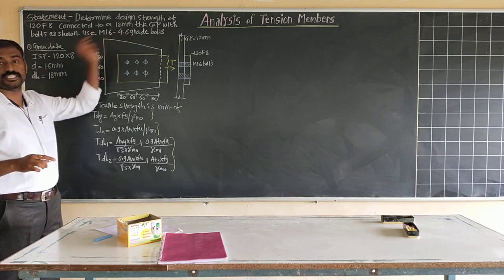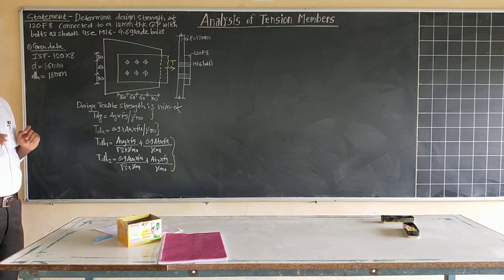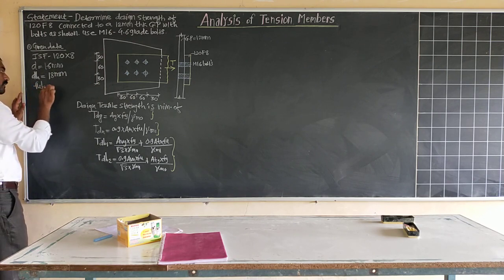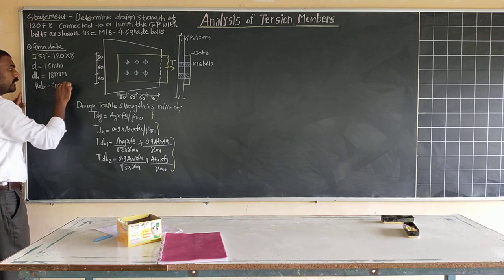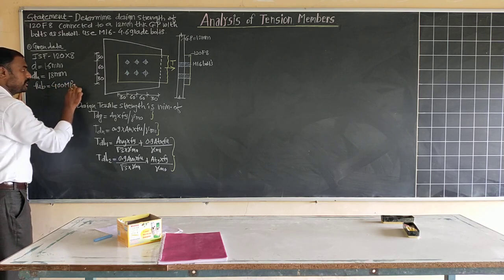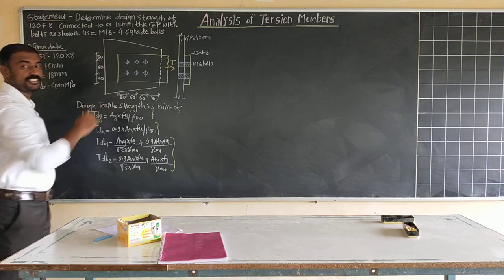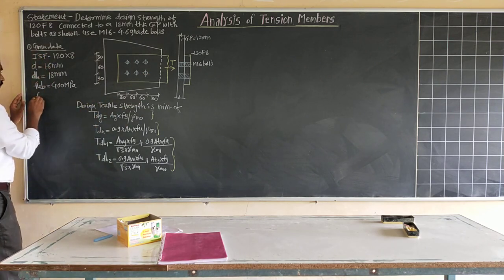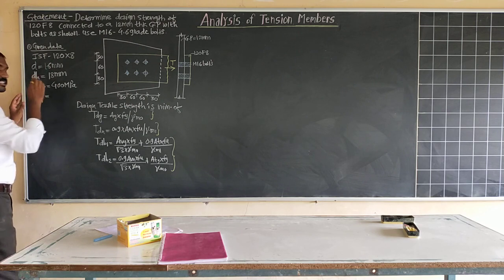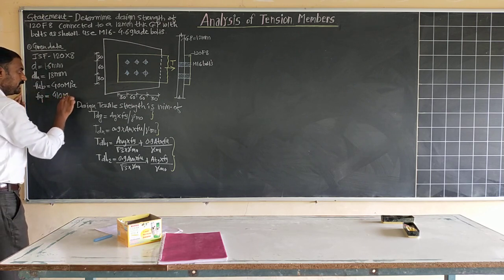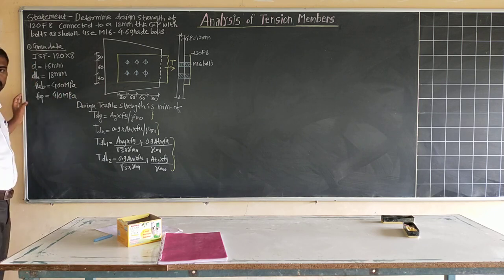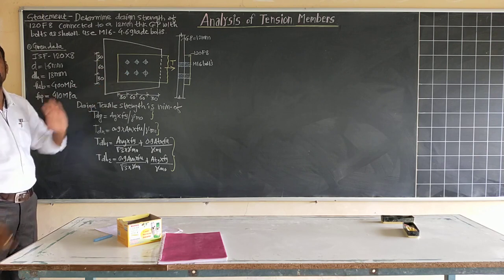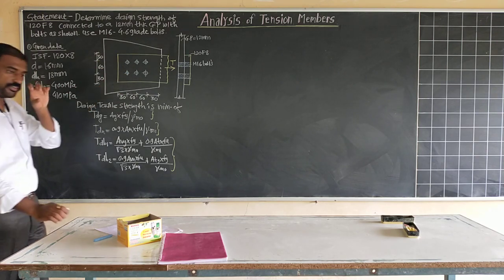Using grade 4.6, the ultimate strength of the bolt FUB is 400 MPa. Since plate strength details are not mentioned, we assume a high strength plate: ultimate strength of plate FUP is 410 MPa, and yield strength FYP is 250 MPa.